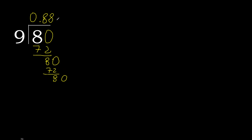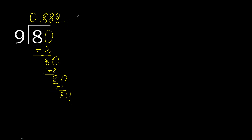9 multiplied by 8, subtract, complete. This repeats — therefore it repeats. The digit 8 repeats after the decimal point.